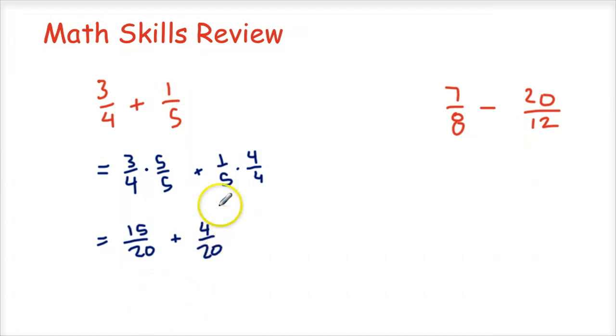So what I have now is fifteen twentieths plus four twentieths. And you can always go back and check and make sure that this simplifies to give you one fifth and this simplifies to give you three fourths. So fifteen twentieths plus four twentieths, that's a total of nineteen twentieths. And can't simplify that at all. So that's our final answer there.